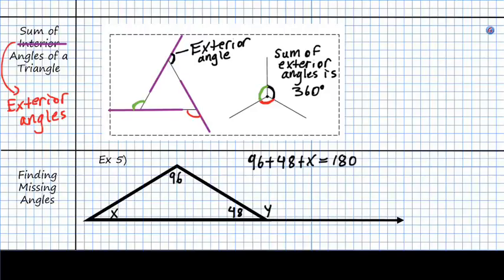And then from there, I can add these two like terms. And so I'll get 144 plus x equals 180. And then x will equal 36 degrees.